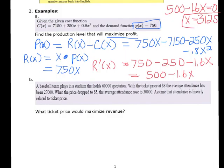In earlier sections we would verify this is actually a max or min using the first or second derivative test. For applications you don't strictly need to do that, but it doesn't hurt. Typically whatever critical point you find will be the max or min; if you have multiple critical points, you can reason about which one doesn't make practical sense.